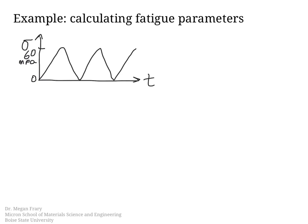And we want to calculate delta sigma, and then the mean stress, the stress amplitude, and the stress ratio. So the delta sigma, or the stress range, is just 60 minus 0, 60 MPa. In this example, the mean stress is found as 60 plus 0 divided by 2 equals 30 MPa.